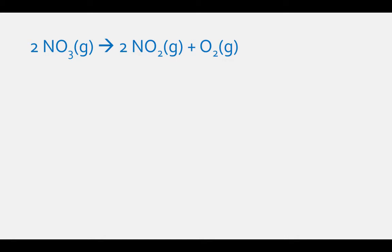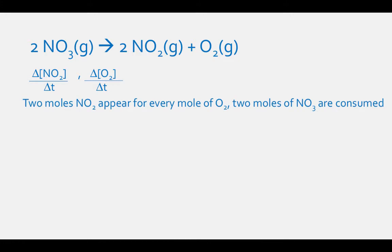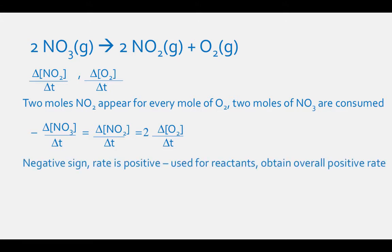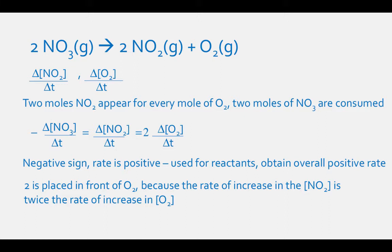NO2 and O2 have different rates of appearance because they have different coefficients in the balanced equation. Two moles of NO2 appear for every one mole of O2 that appears. However, two moles of NO3 are consumed for every two moles of NO2 and one mole of O2 that forms. Let's express these relative rates of change using an equation: negative the change in concentration of NO3 per delta time equals the change in concentration of NO2 per delta time equals two times the change in concentration of O2. The negative sign is used because the measured rate of any reaction is defined as a positive quantity. The 2 is placed in front of oxygen's rate because the rate of increase in concentration of NO2 is twice the rate of increase in concentration of O2.